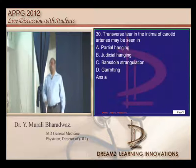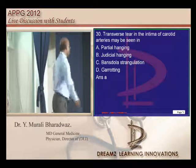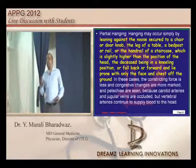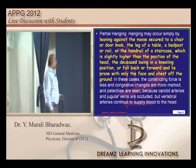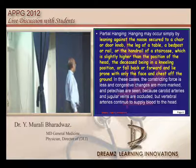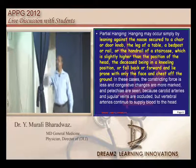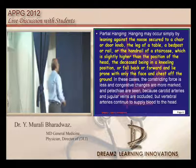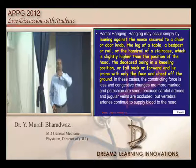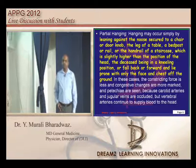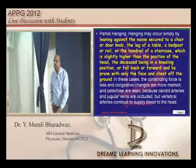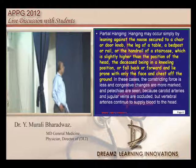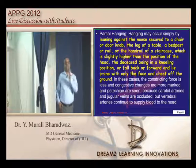A transverse tear in the intima of the carotid is one of the internal findings of partial hanging. In partial hanging, the person leans against a secured noose rather than hanging fully. One of the internal autopsy findings is transverse splits in the intima of the carotid arteries with extravasation of blood.